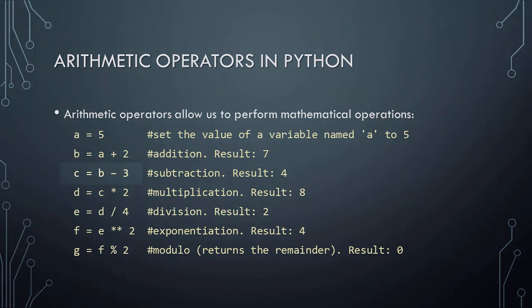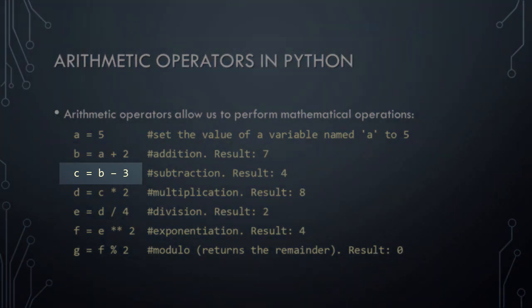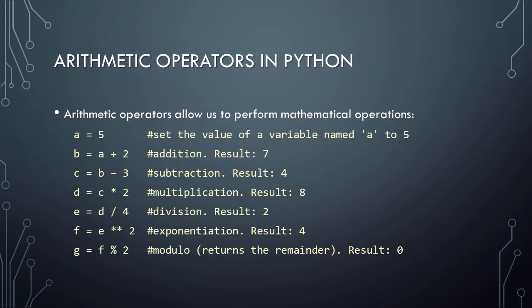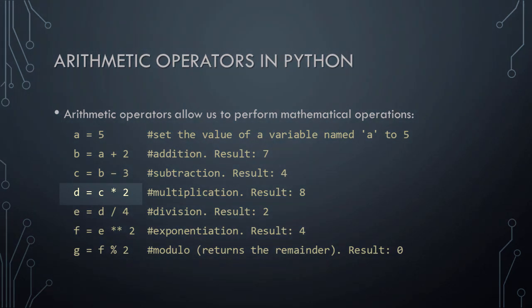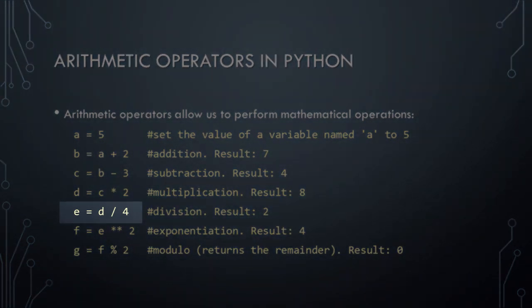To perform subtraction, we use the minus symbol. In this example, we're declaring a variable named c and setting its value to b minus 3. Since we know from the previous step that b equals 7, this means that the value of c will be 7 minus 3, which is 4. Similarly, we use the asterisk symbol to perform multiplication, and the forward slash symbol to perform division.